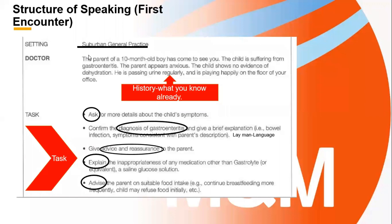Here is a card: a patient is a 10-month-old boy who has come to see you, suffering from gastroenteritis. The first cue is that the parent is anxious, and secondly the child is playing on the floor happily. You can start with a normal greeting and an open-ended question: 'I'm not wrong if I'm talking to Mr. XYZ — you must be Michael's father. I can see you are quite concerned. Can you tell me in your own words what has made you concerned about your son's hydration?'